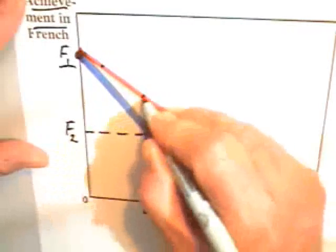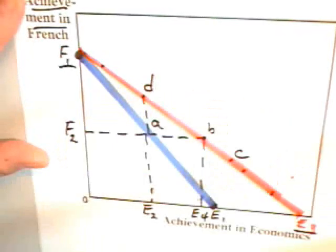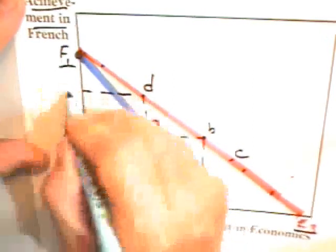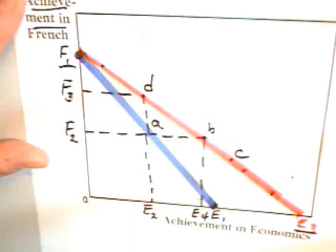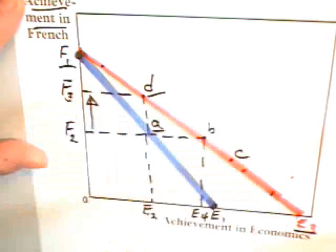That is to say, the student learns more French because the ease with which economics can be learned has been enhanced. Now, in this case, if the student moves from combination A to combination D, and if the dean evaluates the students based on student performance in various courses, then the dean would give the French professor higher marks and would say that the economics professor has done basically nothing.